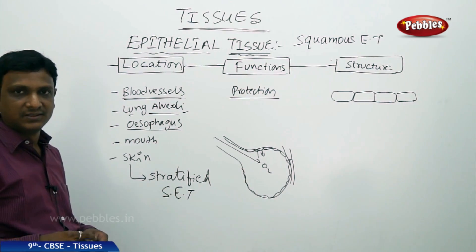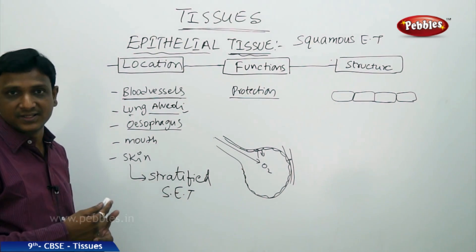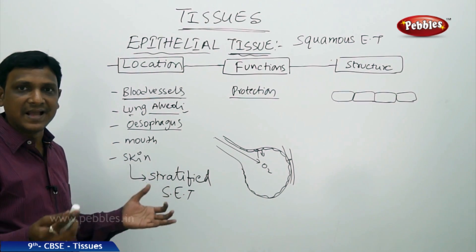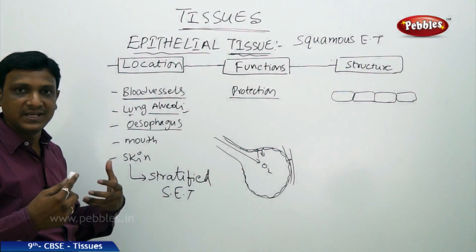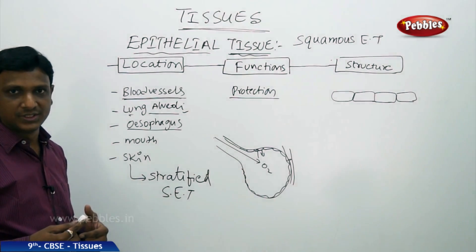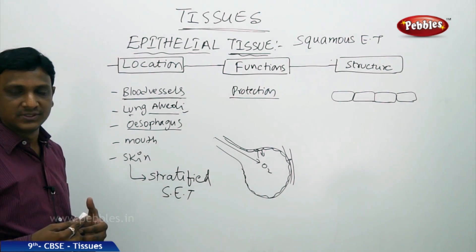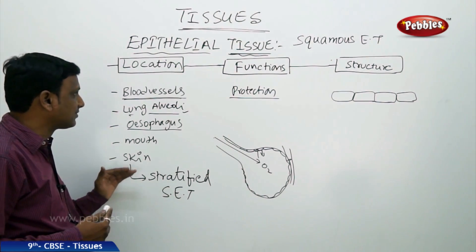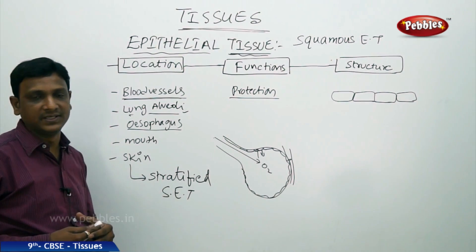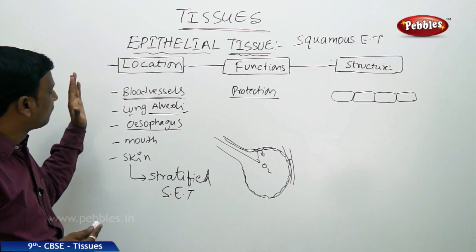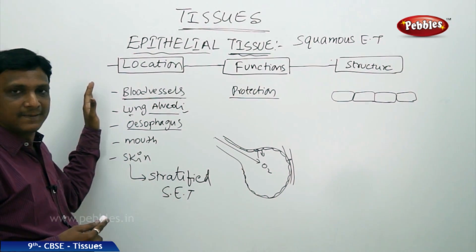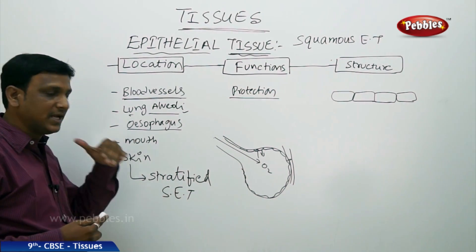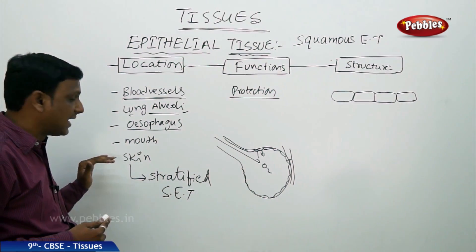Our skin must have many layers because if the outer skin had only one or two layers, they would get easily damaged and the inner muscles would be exposed. For better protection — to withstand tear and wear — the skin has many layers of squamous epithelium, called stratified epithelium. So squamous epithelial tissue is found lining blood vessels, lung alveoli, esophagus, the lining of the mouth, and the skin.